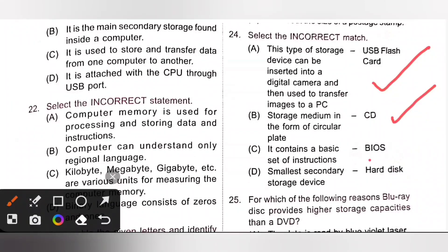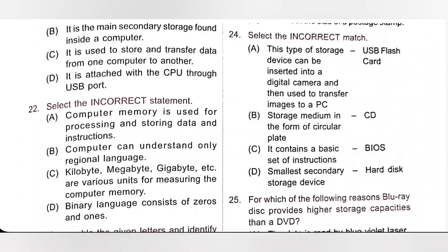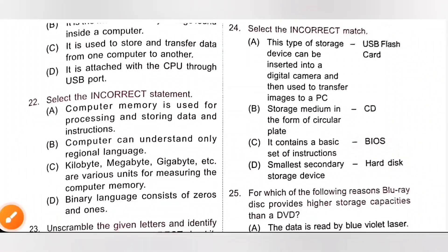D, smallest secondary storage device, hard disk. It is the incorrect match. Because hard disk can store large amount of data. So option D is the incorrect match. Option D is the correct answer.